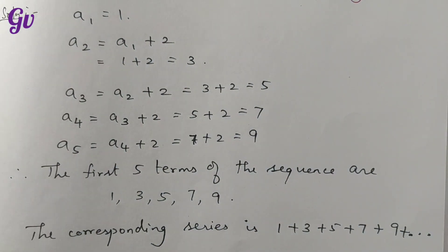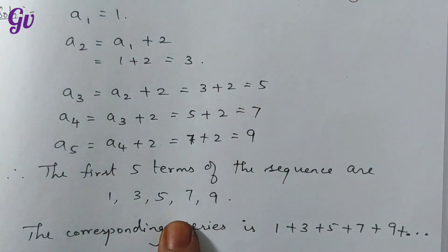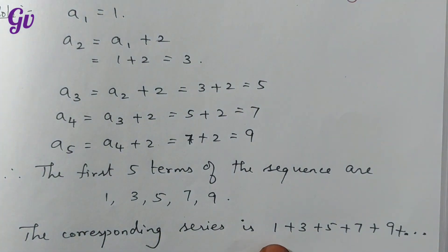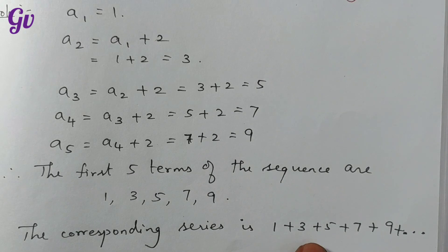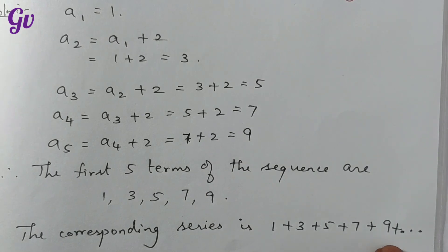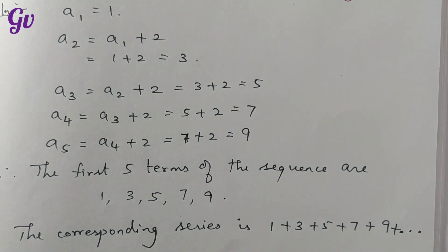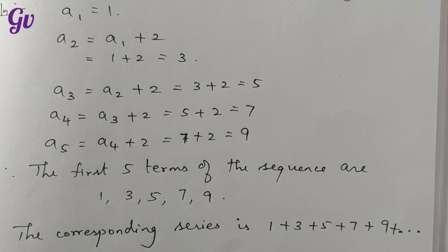This is the corresponding series. We add all terms together: 1 plus 3 plus 5 plus 7 plus 9, etc. This is the series corresponding to the first 5 terms of the sequence.